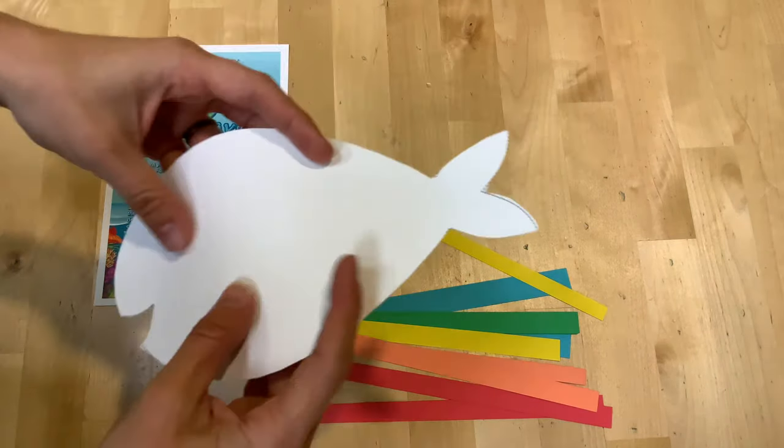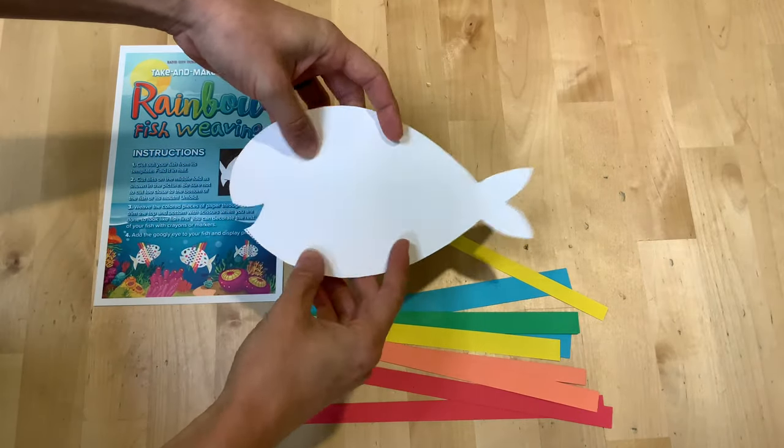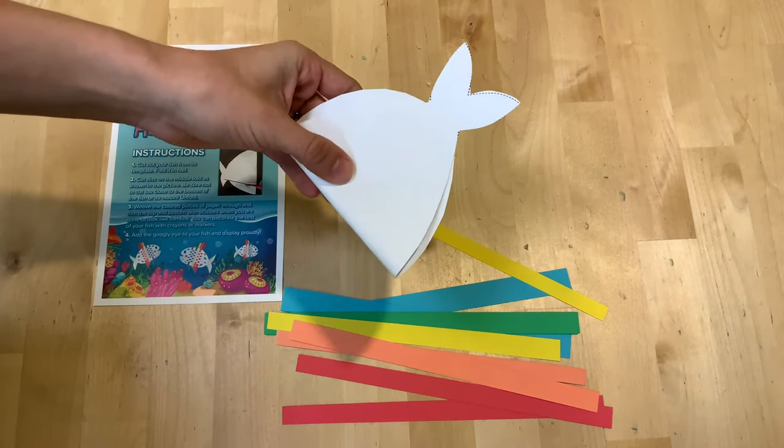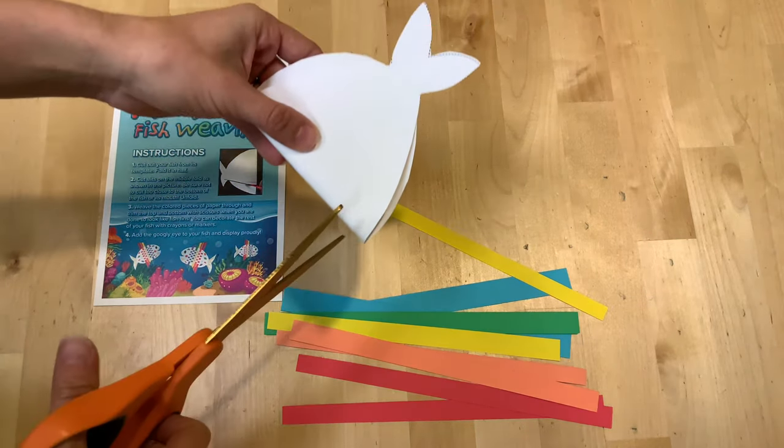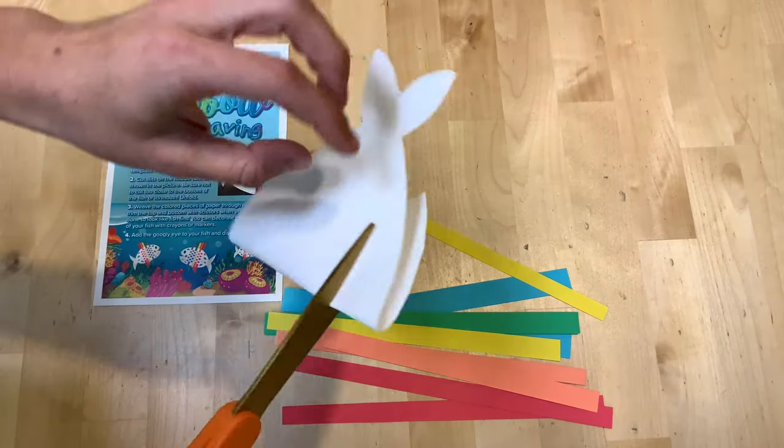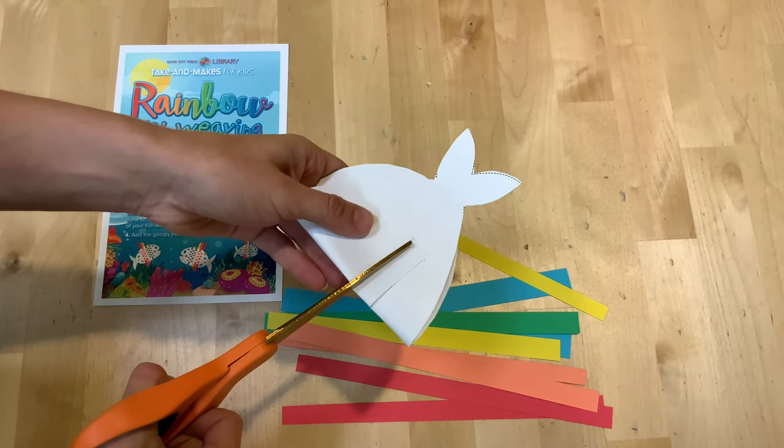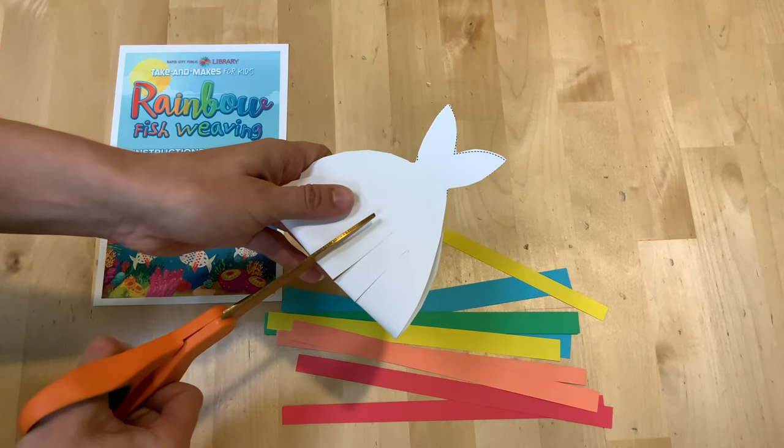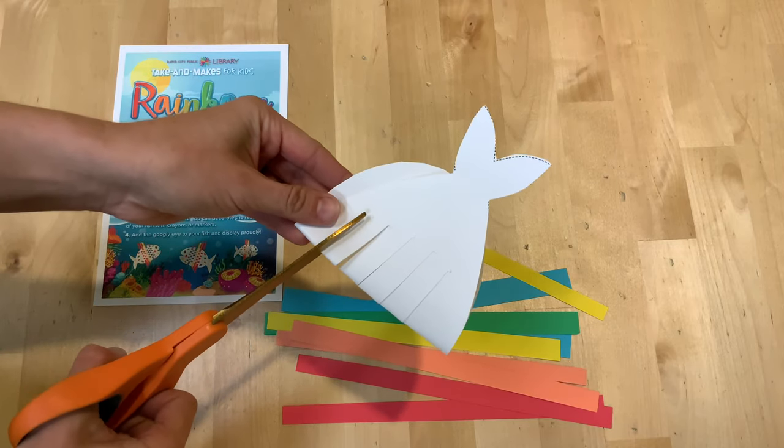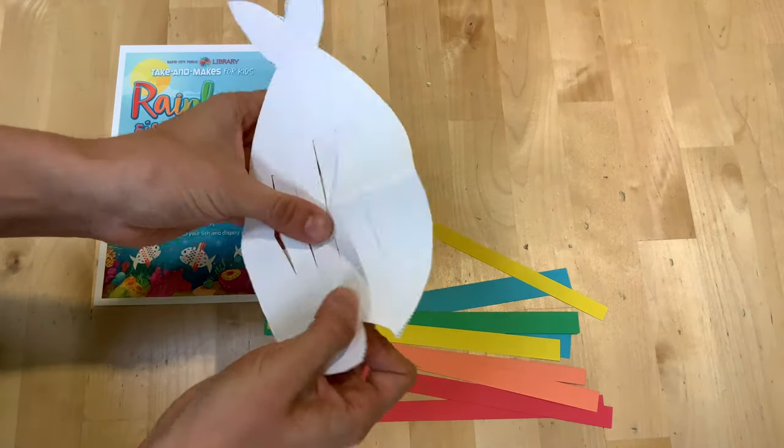Now we're going to fold our fish in half. We want the line to be kind of right down the center of the fish. And next we're going to cut slits into the middle of the fold. Now you want to make sure that you don't cut all the way into his mouth. We're just going to cut a few slits. Okay, and then we'll open up our fish again.